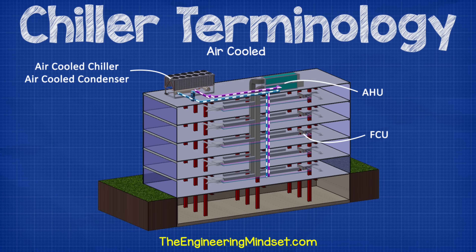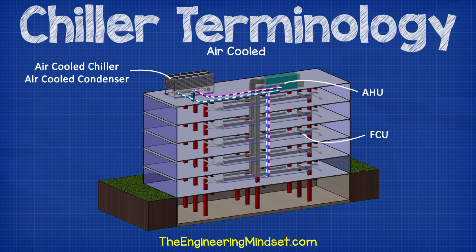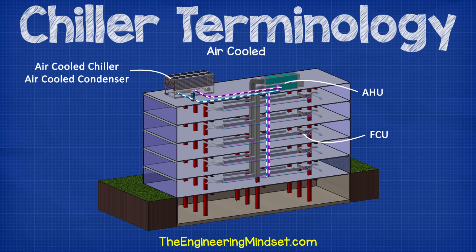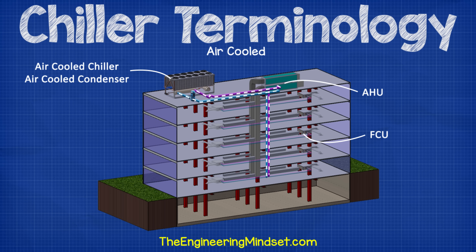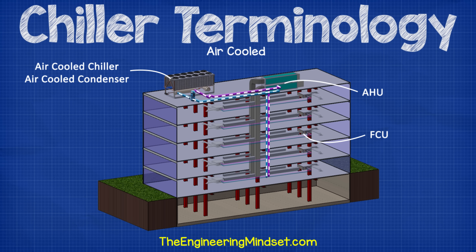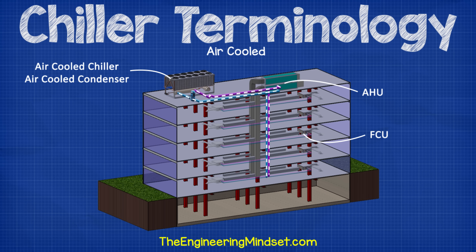Air-cooled. This refers to an air-cooled chiller. These are located outside the building, usually on the roof or down near the car park. Very rarely these are located inside the building, but they can be fitted with ductwork to achieve this. These types of chillers do not use condenser water circuits. They instead use fans to blow air across the condenser, which is why they are called air-cooled chillers.